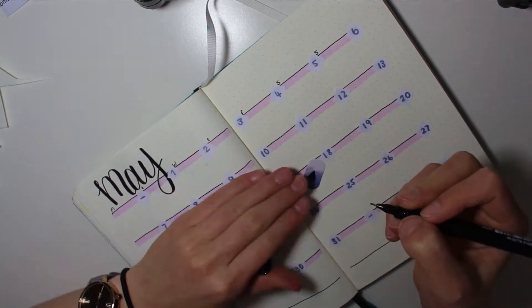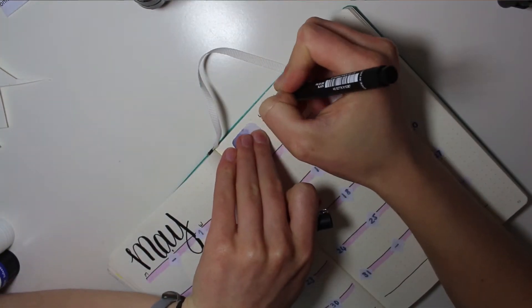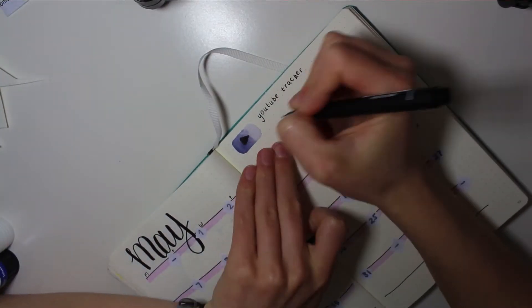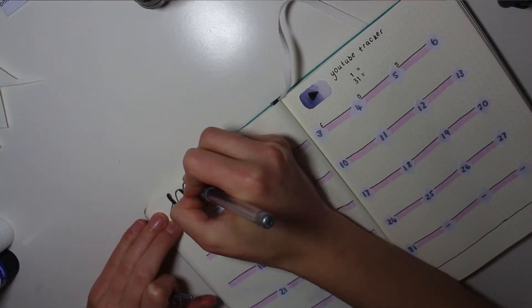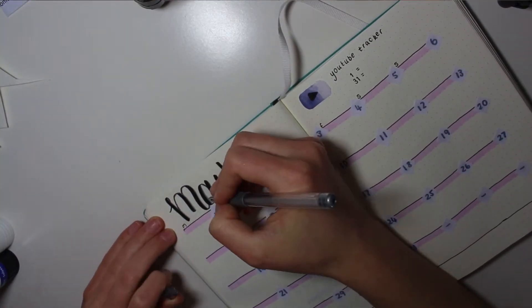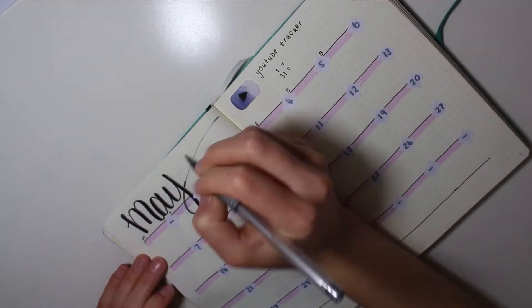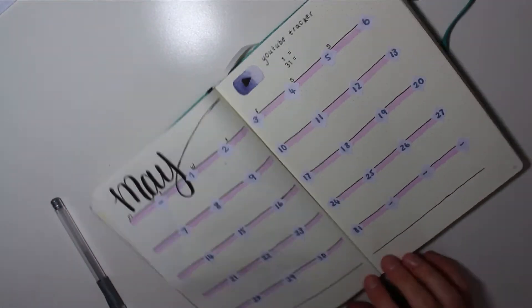And then I'm just doing this little YouTube tracker and I find that really nice to do just to see where I'm at with my YouTube channel each month. I prefer to do a bigger calendar layout because I don't really have anything else to put on my May page so this works really well for me.